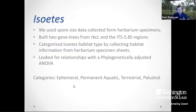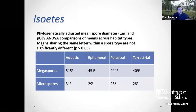The habitat categories were: ephemeral (a temporary pool that does not last), permanent aquatic (lakes, streams, rivers), terrestrial (growing on land, much more uncommon), and palustral (slightly wet, on the edge of wetlands). These last two groups are very small in this dataset — the vast majority of Isoetes grow in ephemeral water habitats or permanent aquatics. When we phylogenetically adjusted the mean spore diameters and compared with ANOVA, we found one significant result: permanent aquatic plants have significantly larger megaspores on average than any other group.